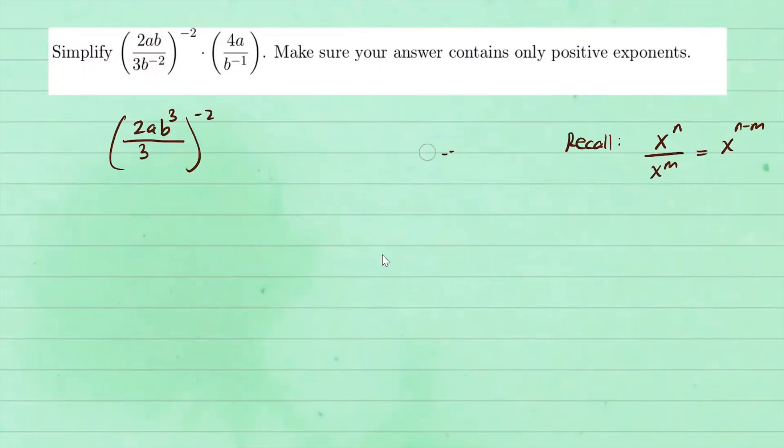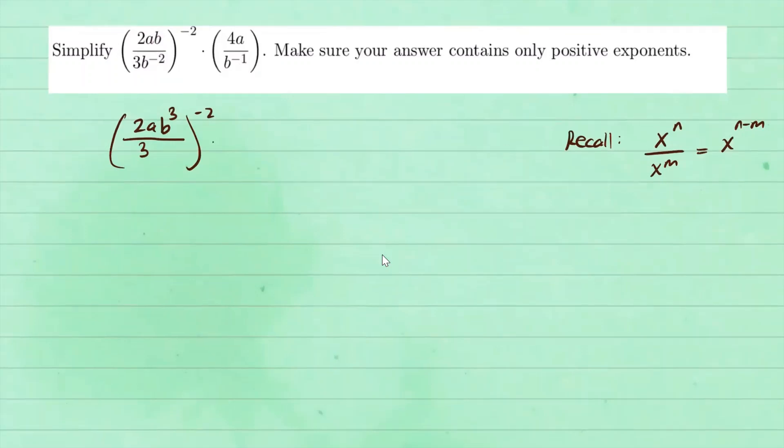And now you can move on to the next expression right here. That one, we can just drop the parentheses. So this is just times a, 4a, and b to the negative one.